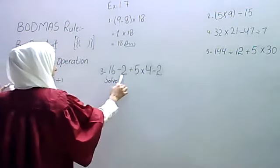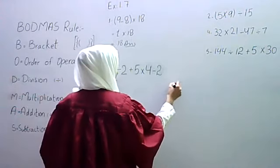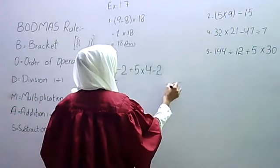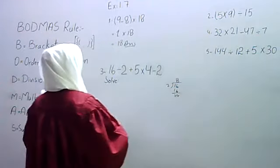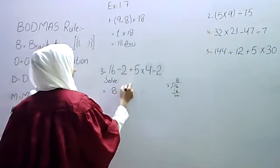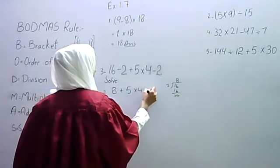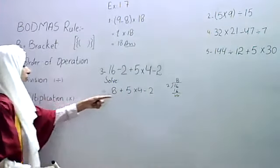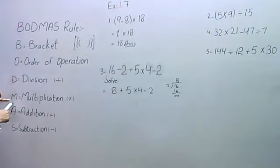16 divided by 2. 16 divided by 2 is 16. Answer is 8. Then plus 5, multiply by 4, then minus 2. Now, what do we do next? Next, we have multiplication.